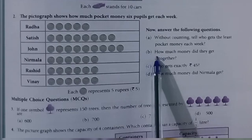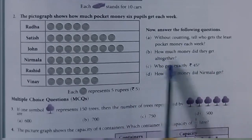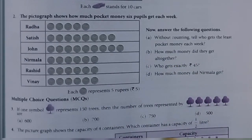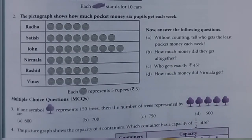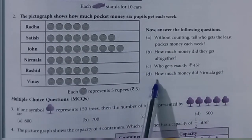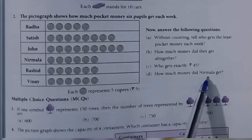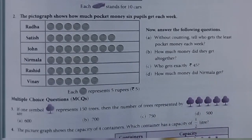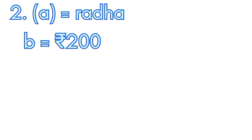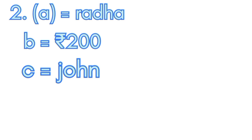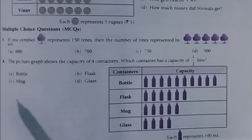Part A: The answer is Radha. Part B: How much money did all get together? The answer is 200 rupees. Part C: Who gets exactly 40 rupees? The answer is John. Part D: How much money did Nirmila get? The answer is 30 rupees.